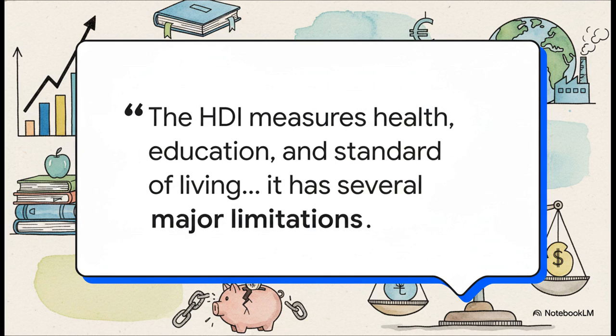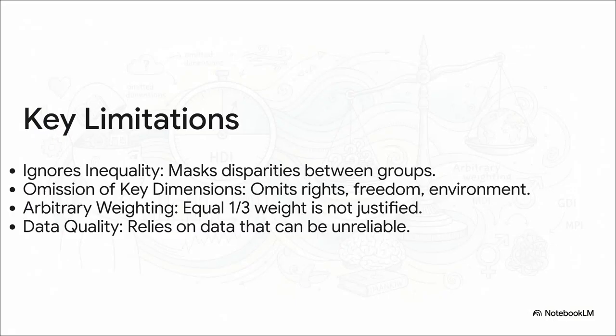We're going to take a high-scoring answer and break it down piece by piece to see exactly why it works so well. Check out how this answer kicks off — no fluff. It starts with a super clear, confident definition of HDI, immediately telling the examiner you know your stuff. But then it immediately pivots to what the question is actually about: the limitations. Structure is your best friend in an exam. The answer lays out the limitations in four clean numbered points, making it easy for the examiner to read and give you marks. But look closer — it doesn't just say it ignores inequality; it actually mentions the solution: the Inequality-Adjusted HDI, or IHDI. That is showing off your knowledge in the best way possible.